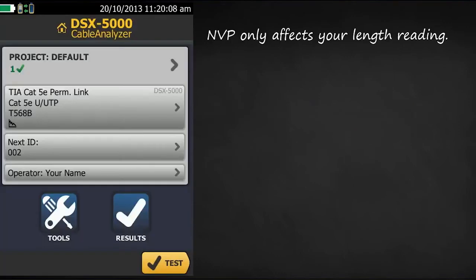The MVP value only affects your length reading. It has no impact on your near-end crosstalk, insertion loss, return loss, or any other frequency-based measurements — not even propagation delay or delay skew.